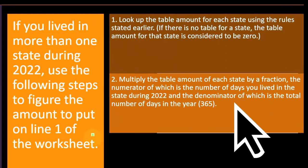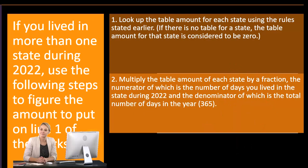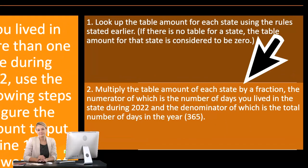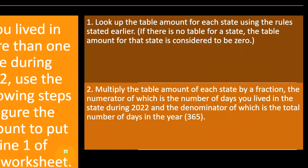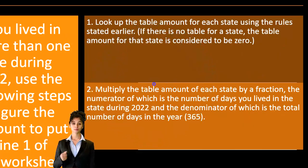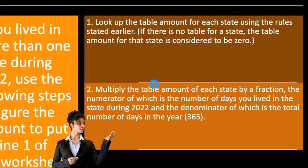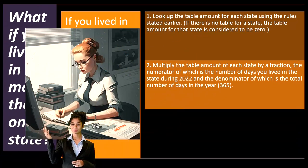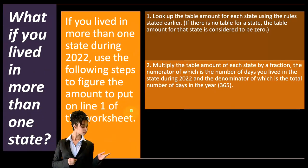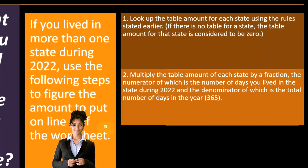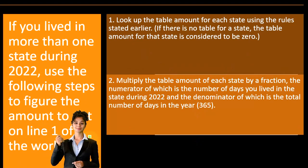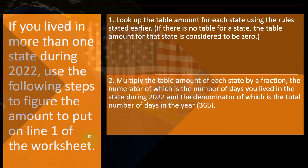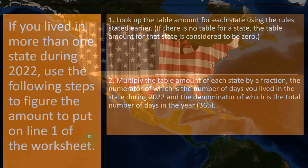Step two: multiply the table amount for each state by a fraction — the numerator is the number of days you lived in that state during 2022, and the denominator is the total number of days in the year, 365. So if you lived in two states for a fraction of the year, you calculate that fraction and apply one table for one fraction and the other table for the other fraction, weighting by percentage of the year spent in each state.